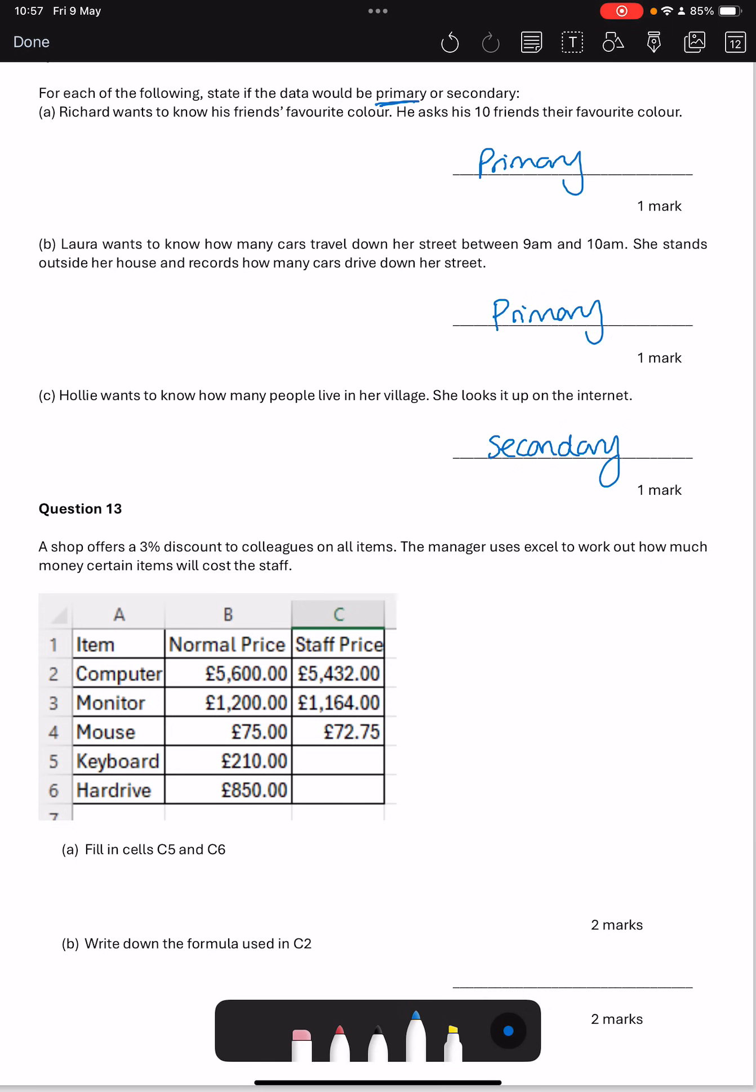Question 13 part A says find out the value of this. If I'm decreasing something by 3%, the easiest thing to do is to times it by 0.97. 210 times 0.97 which is 203 pound 70 and then 850 times 0.97 is 84 pound 50. Part B, write down the formula used in C2. C2 is this cell here. So it will be equals and that's the B2 times by, which on Excel is a little asterisk, 0.97.